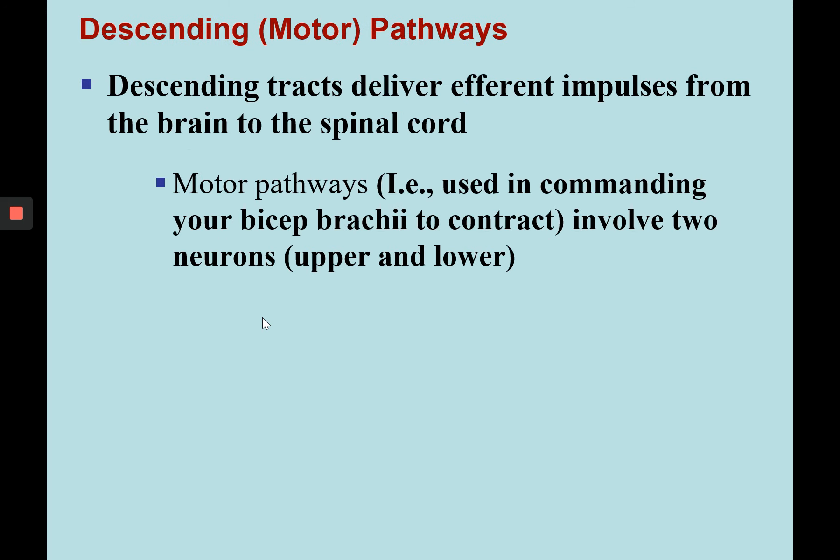With descending tracts, there are only two neurons — the upper and lower neuron — rather than three as in ascending pathways. In descending or motor pathways, signals travel away from the brain or to lower parts of the spinal cord. An example of a motor pathway using an upper and lower neuron would be commanding your bicep brachii to contract, using a somatic motor neuron in the peripheral nervous system and an interneuron from the brain.